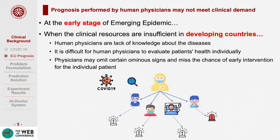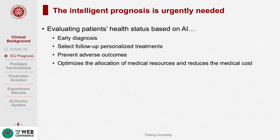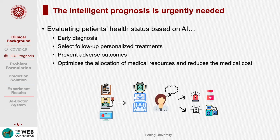However, it is difficult for human physicians to evaluate patients' health risk and accurately identify the critical factors, especially when the clinical resources are insufficient in developing countries. Human physicians lack knowledge and experience of the disease. They may omit medical signs and miss the chance of early intervention. The prognosis performed by human physicians may not meet huge demand, while clinical experience accumulation is time-consuming and challenging in an early outbreak. As a result, intelligent prognosis is an urgent need against the emerging epidemic. It not only assists physicians to perform early diagnosis, select personalized treatments, and prevent adverse outcomes, but also optimizes the allocation of medical resources and reduces medical cost.